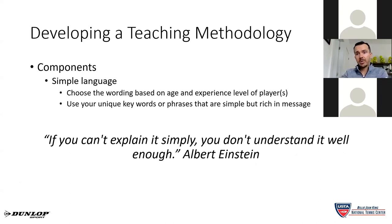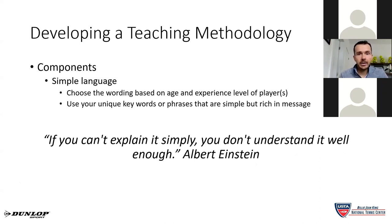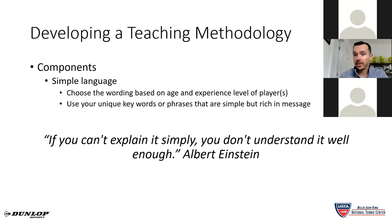Now let's get into more detail about the components of my methodology, starting with simple language. As players develop, tennis can get a little complicated. Some words like 'kinetic chain' may mean very little to a less-developed player. So I try to err on the side of simplicity. One phrase I like to use is: if you can't explain it simply, you don't understand it well enough. I try to use that on all lessons and groups, even my high performance groups — I try to keep the language fairly simple.